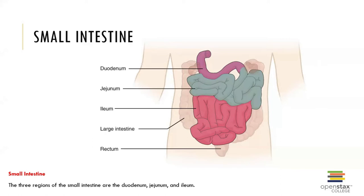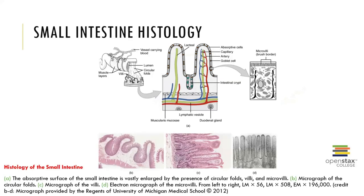We have what's called the duodenum, the upper region of the small intestine. We have the jejunum and the ileum, which are the middle and lower portions, where continued chemical digestion and absorption occur. Here's a closer look at the absorptive surfaces of the small intestine, with a specific look at the tissues.